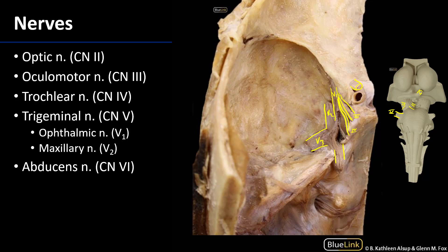The sixth cranial nerve, the abducens, is visible on the brainstem model. Here we can see the abducens moving through the cavernous sinus on its way out to the orbit through the superior orbital fissure.